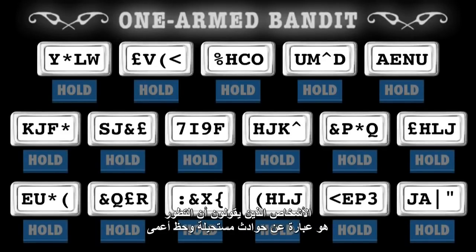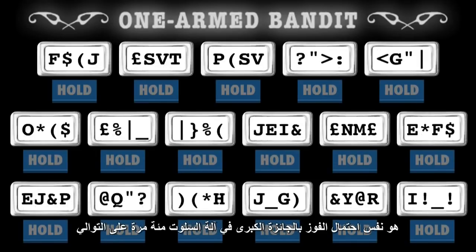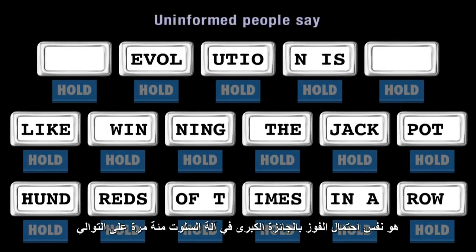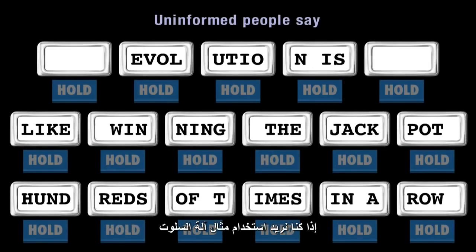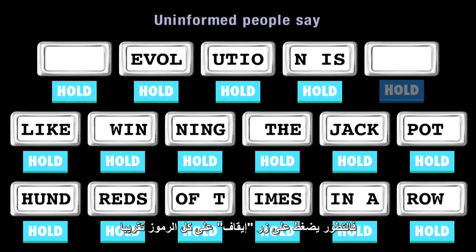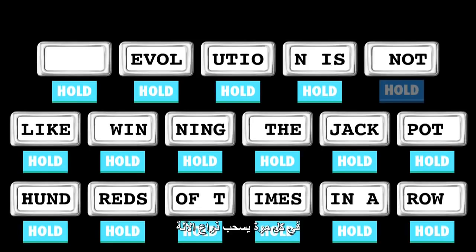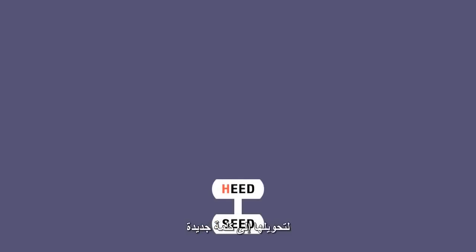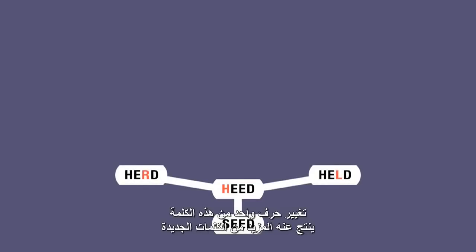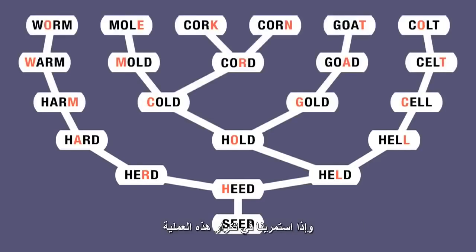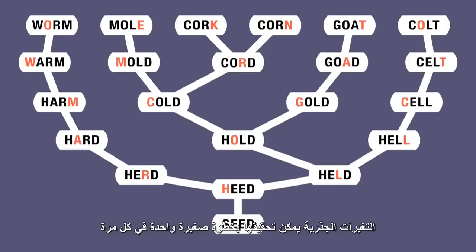People who say that evolution is all about impossibly unlikely accidents and blind luck often like to claim that the probability of lifeforms evolving is the same as winning the jackpot on a one-armed bandit hundreds of times in a row. But miraculous accidents are the opposite of what evolution is about. If we're going to use the one-armed bandit analogy, then evolution presses the hold button on almost all symbols on every pull of the lever. Starting with a word, we only need to change one letter to turn it into a new word — and repeating this process can produce words that differ dramatically from the original. Dramatic change can be achieved one small step at a time, and this is what happens with evolution, except that countless mostly minute changes have accumulated over millions of years.